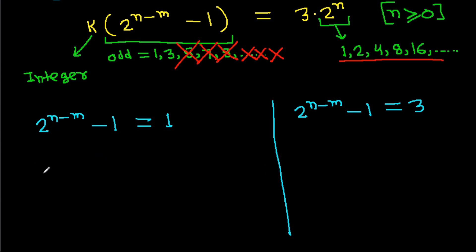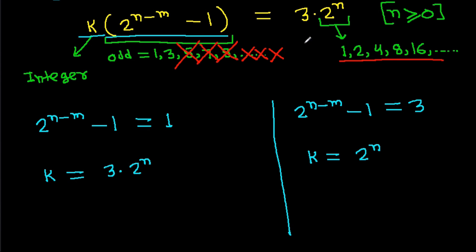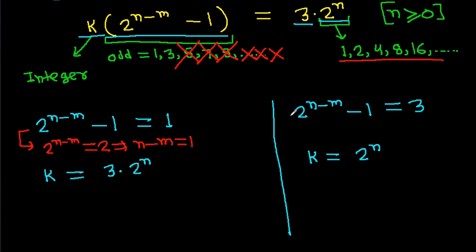If 2^(n-m) minus 1 equals 1, then k equals 3 times 2^n, and 2^(n-m) equals 2, so n minus m equals 1. If 2^(n-m) minus 1 equals 3, then k equals 2^n, and 2^(n-m) equals 4, so n minus m equals 2.